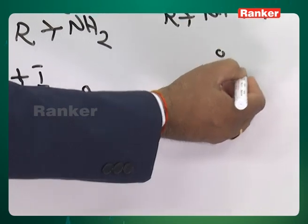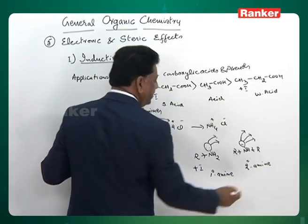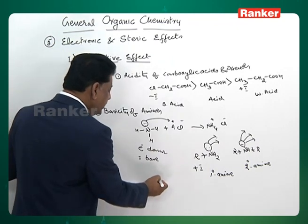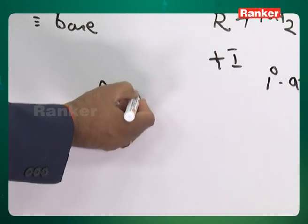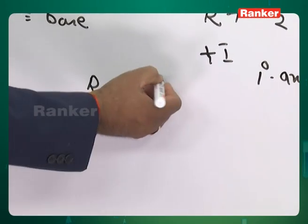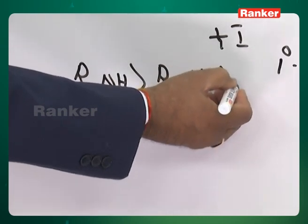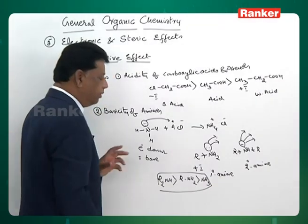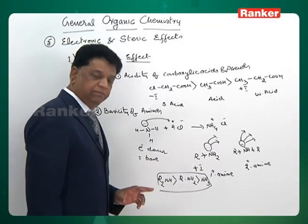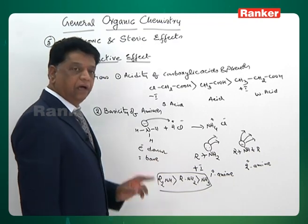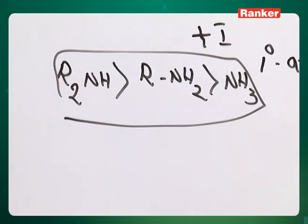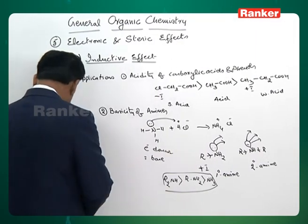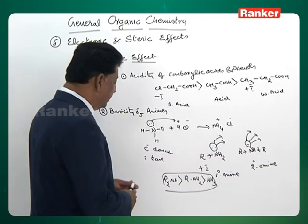This is called a secondary amine or two-degree amine. The general statement, leaving aside the nature of R, is that secondary amines (R2NH) are found to be more basic than primary amines, and the basicity decreases as the number of alkyl groups decreases. More alkyl groups means more basicity.